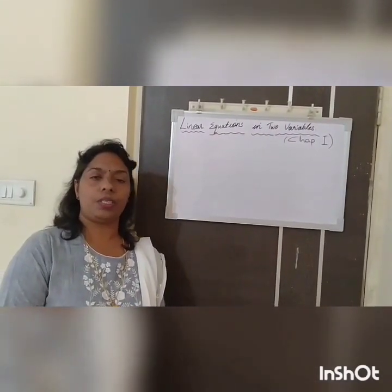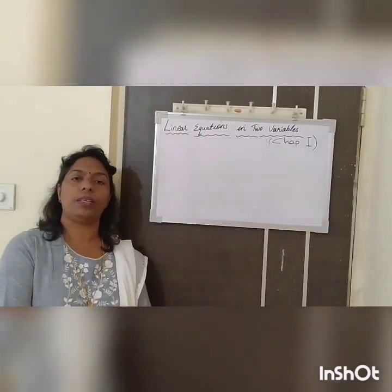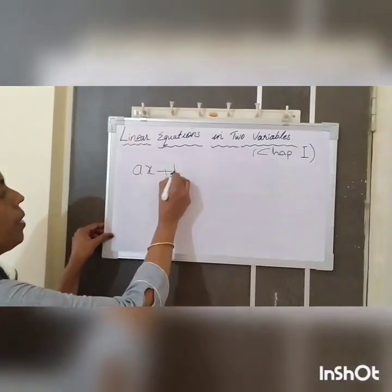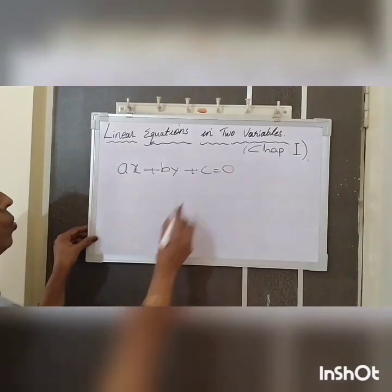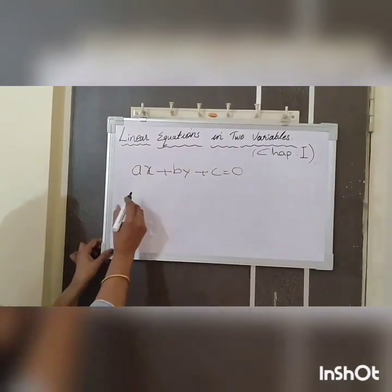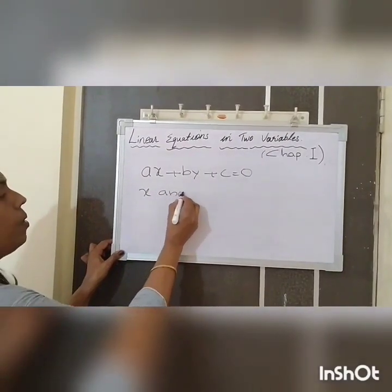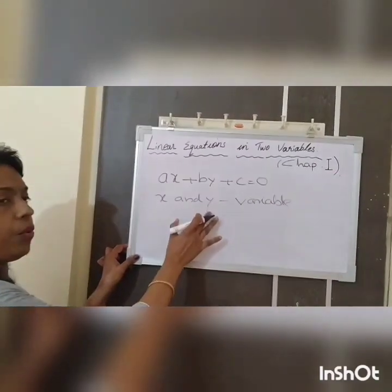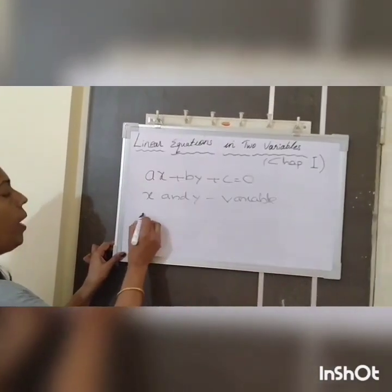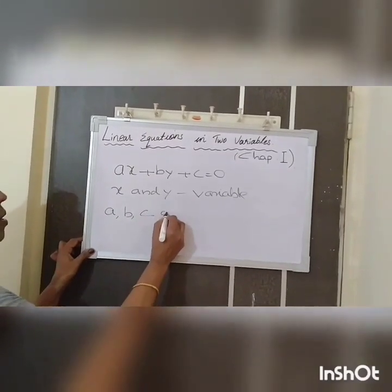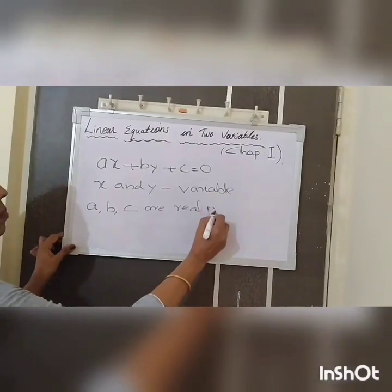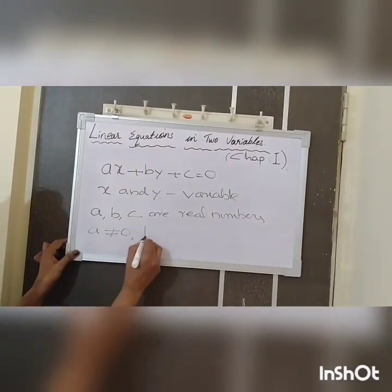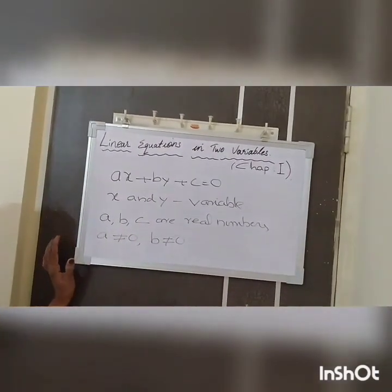What are linear equations in two variables? Last year we learned linear equations in one variable. Here, AX plus BY plus C equals 0 is the linear equation in two variables, where X and Y are the two variables, the degree of X and Y are 1, and A, B, and C are real numbers, with A not equal to 0 and B not equal to 0 at the same time.